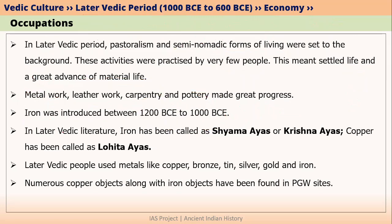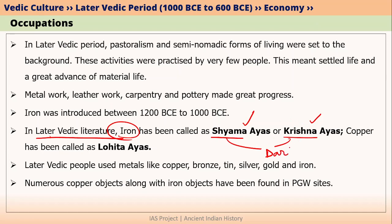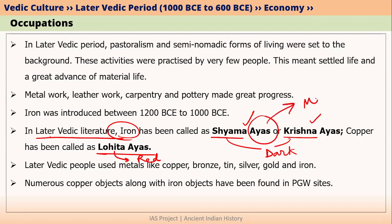In later Vedic literature, iron has been called as 'Syama Ayas' or 'Krishna Ayas.' The meanings of Syama and Krishna actually mean dark, which is why iron has also been called the dark metal. Copper has been called 'Lohita Ayas.' Please remember that iron is Syama Ayas or Krishna Ayas, and copper is Lohita Ayas. The word 'Ayas' in general meant metal — this is also important.